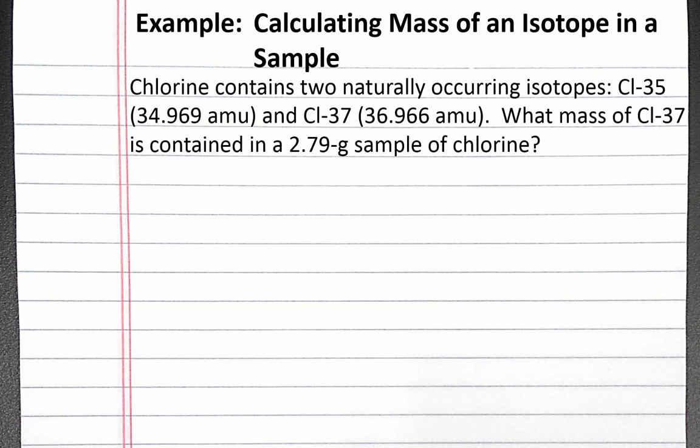In this example, we calculate the mass of an isotope in a sample of chlorine based on the mass of the sample and the masses of all naturally occurring isotopes of chlorine. Our problem reads: chlorine contains two naturally occurring isotopes — chlorine-35 with a mass of 34.969 atomic mass units and chlorine-37 with a mass of 36.966 atomic mass units. What mass of chlorine-37 is contained in a 2.79 gram sample of chlorine?